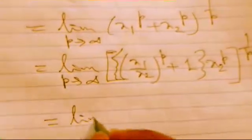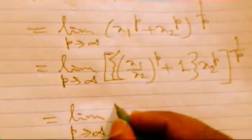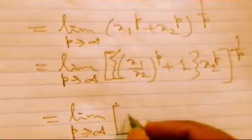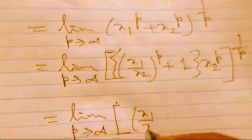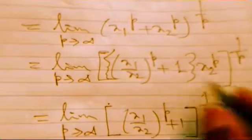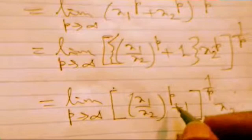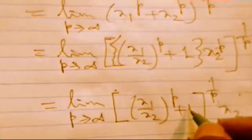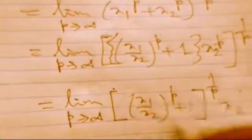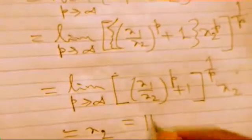Limit p tending to infinity, taking two brackets: one is (x_1 by x_2) to the power p plus 1, whole to the power 1 by p, and another is x_2 to the power p, and p will cancel, so x_2 is there. Since x_1 is less than x_2 and p tends to infinity, for any value of this result that is a small quantity, negligible, the result will turn into x_2, and it is clear that the result is x infinity.